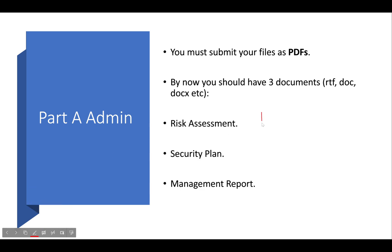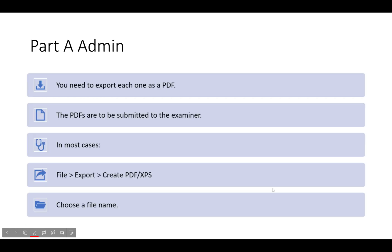So that's Activity 1, Activity 2, Activity 3. For Part A admin, you need to export each one as a PDF. The PDFs are to be submitted to the examiner — you don't actually send the Word documents or the RTF files. You can leave them in there; it's not detrimental if you do, but the requirement is PDFs.